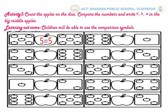1, 2, 3, 4, 5, 6 — here the number of apples is 6. There is only one apple in the next dice. So 6 is greater than 1; we will put the greater than symbol in the middle apple. Similarly, count and put the correct symbol to compare the number of apples on the dice.